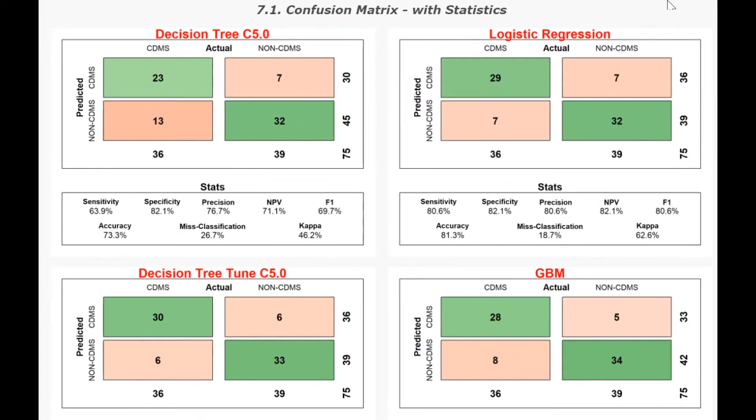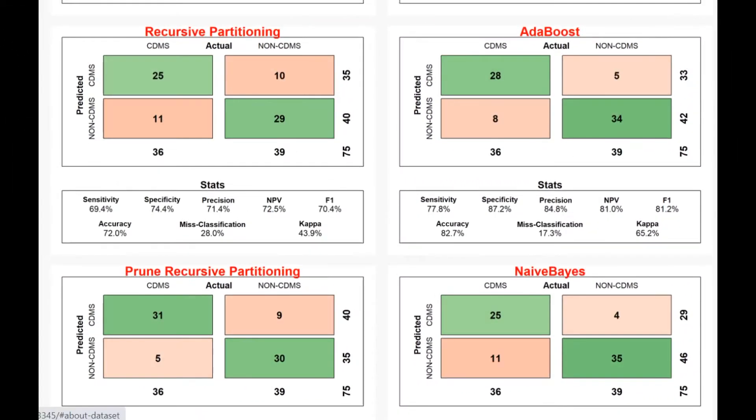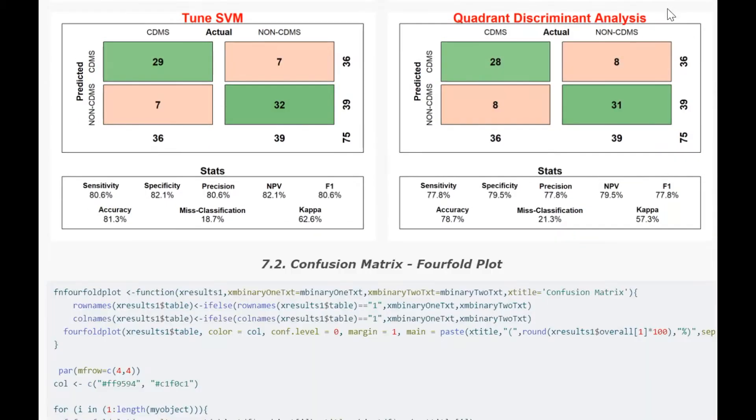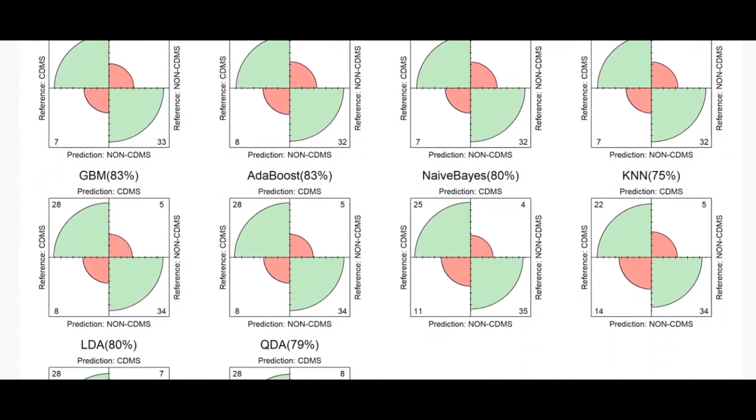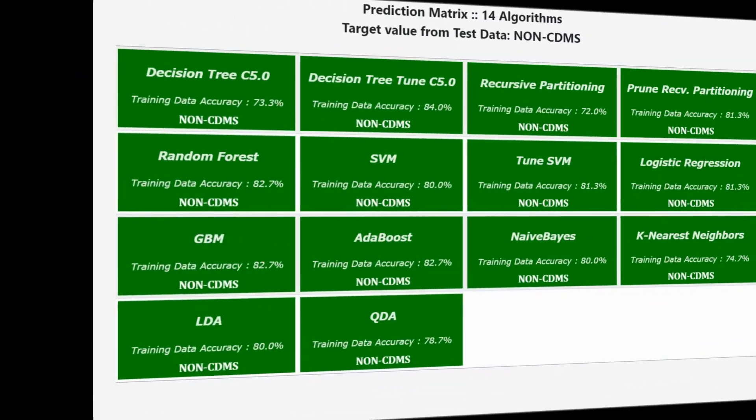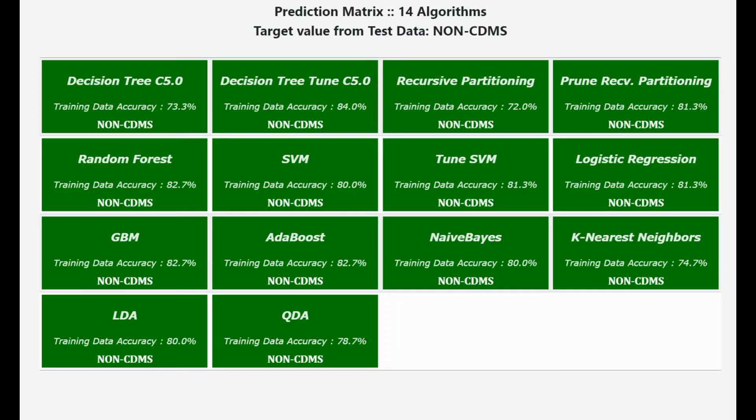For each one of the 14 algorithms, you get a confusion matrix with statistics and also 4 folded confusion matrix for all algorithms next to each other. In the prediction section, we use one of the rows in test data as new data. Here is the prediction matrix of all 14 algorithms.